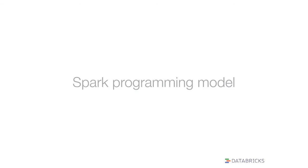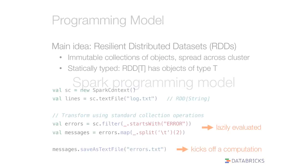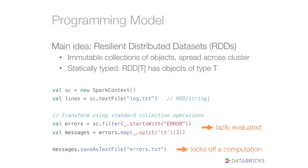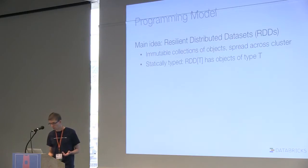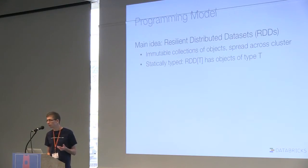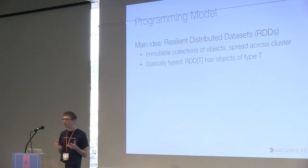A little bit on the programming model, just to set the stage. In Spark, the main idea you work with is these distributed collections called Resilient Distributed Data Sets, or RDDs. The Resilient part is because we automatically provide fault tolerance for them. Basically, these are just immutable collections of objects in the Scala API — just Scala objects divided across your cluster.